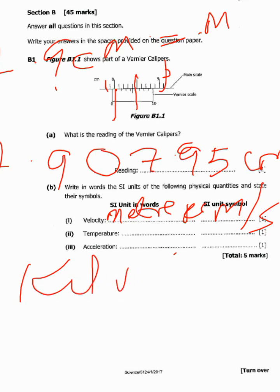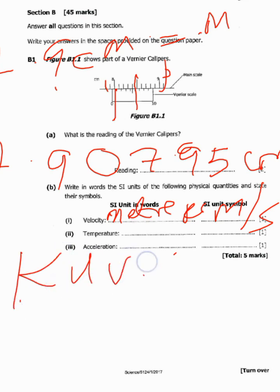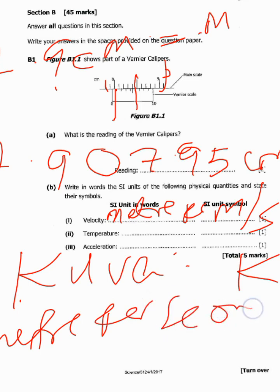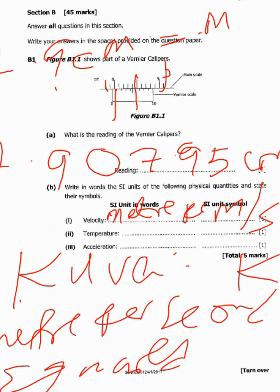For temperature, it is measured in kelvins — written in words as 'kelvins,' and the symbol is K. For acceleration, in words it is meters per second squared, and the symbol is m/s². So: velocity is meters per second with symbol m/s; temperature is kelvins with symbol K; acceleration is meters per second squared with symbol m/s².